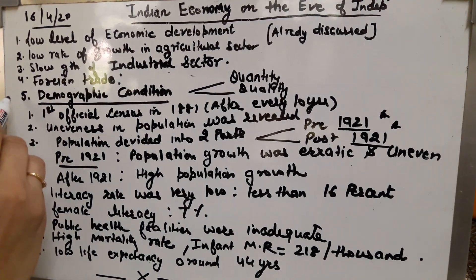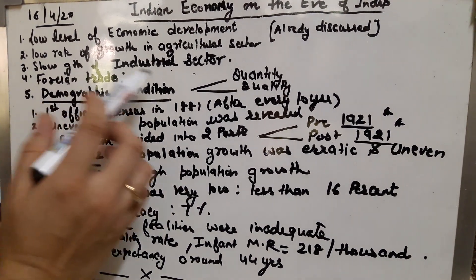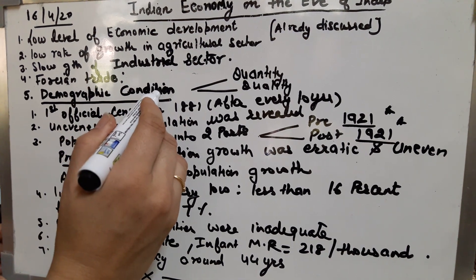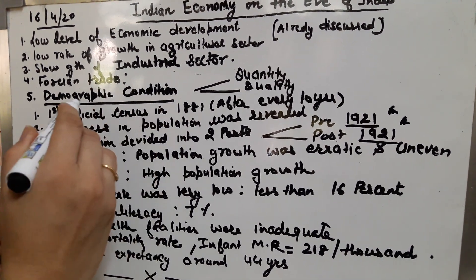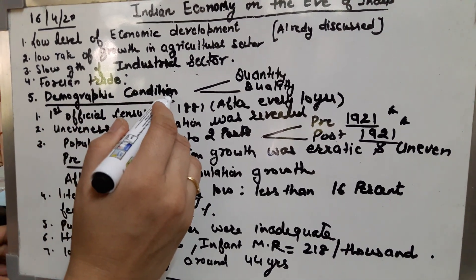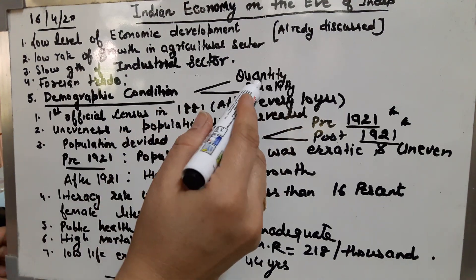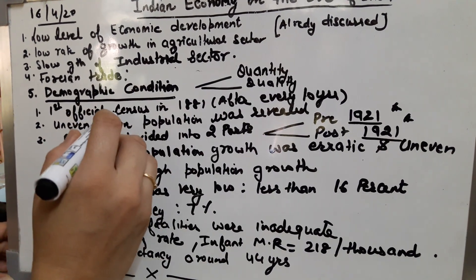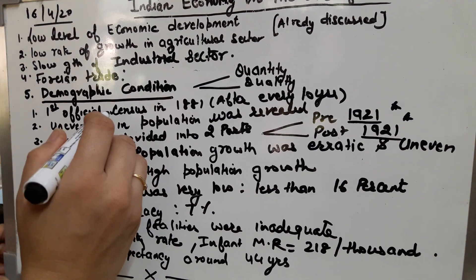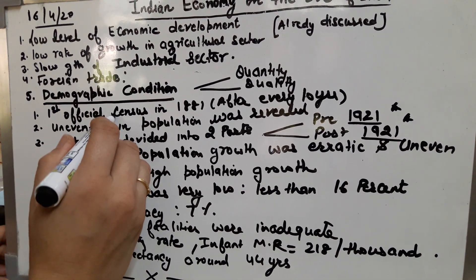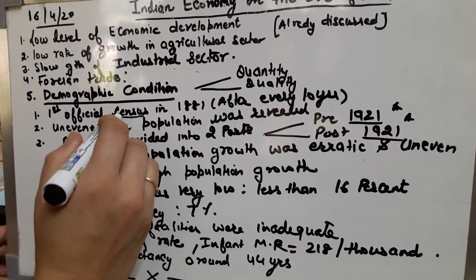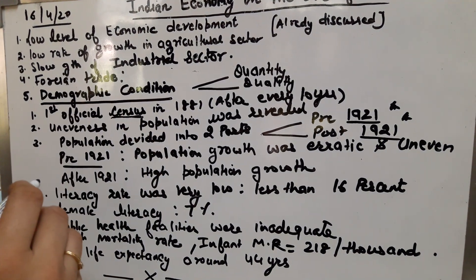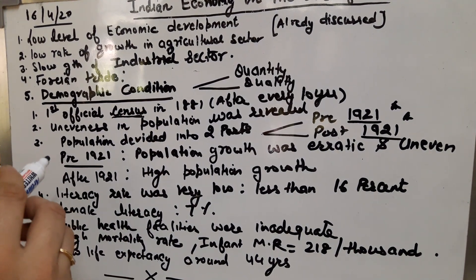Today I am sending you the video on demographic condition. The meaning of demography is population, so we are evaluating the condition of population in terms of quantity and quality. All of you must be aware that population census is conducted after every 10 years, and it is an attempt to find out the population growth of the country.